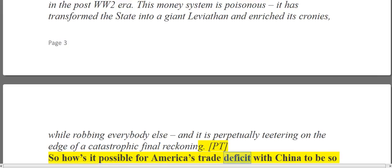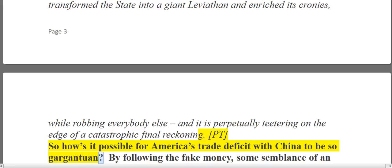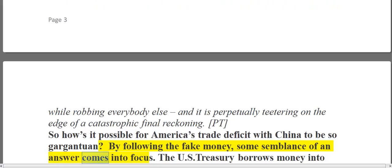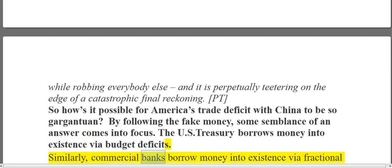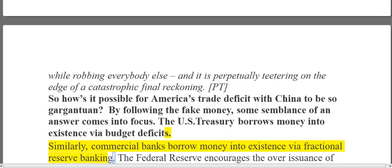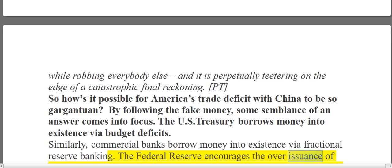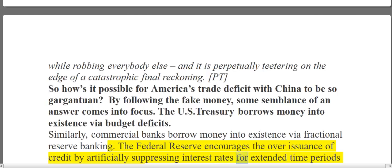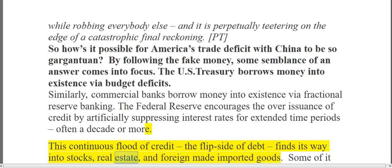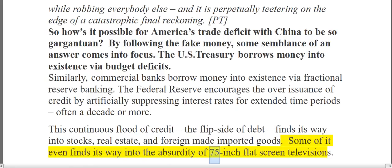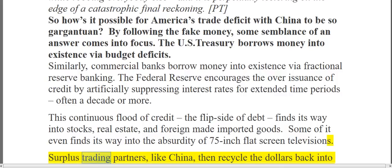So how is it possible for America's trade deficit with China to be so gargantuan? By following the fake money, some semblance of an answer comes into focus. The US Treasury borrows money into existence via budget deficits. Similarly, commercial banks borrow money into existence via fractional reserve banking. The Federal Reserve encourages the over-issuance of credit by unofficially suppressing interest rates for extended time periods, often a decade or more. This continuous flood of credit — the flip side of debt — finds its way into stocks, real estate, and foreign-made imported goods. Some of it even finds its way into the absurdity of 75-inch flat-screen televisions.